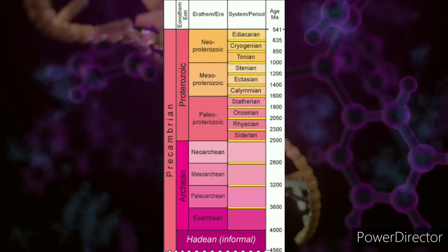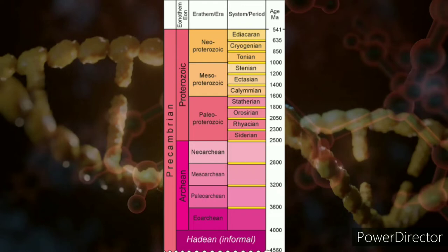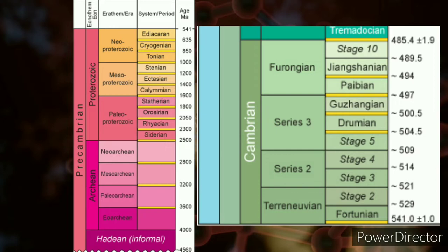Time span: The Precambrian time span is the earliest time period on the geologic time scale. It stretches from the formation of the Earth, 4.6 billion years ago, to around 600 million years ago, and encompasses many eons and eras leading up to the Cambrian period in the current eon.